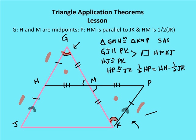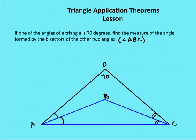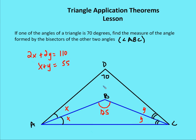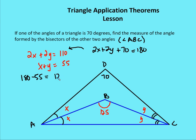Let's move on to a couple of practice problems. If one of the angles of a triangle is 70 degrees, find the measure of the angle formed by the bisectors of the other two angles. We define the two bisected angles with variables X and X, and Y and Y. So 2X plus 2Y plus 70 equals 180 degrees, giving us 2X plus 2Y equals 110 degrees, and X plus Y equals 55 degrees. Since X plus Y plus angle ABC equals 180 degrees, we subtract 55 from 180 degrees to get the measure of angle ABC.